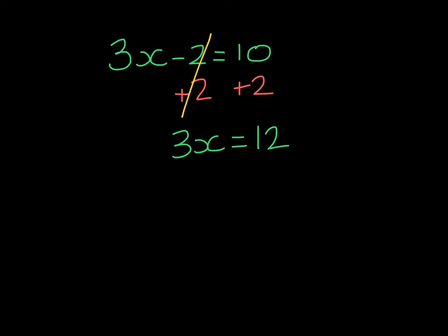Now we see x is being multiplied by 3, so the inverse is to divide by 3 on both sides. Remember, 3 divided by 3 will give me 1, so 1 goes with x, and on the right-hand side, 12 divided by 3 is 4.